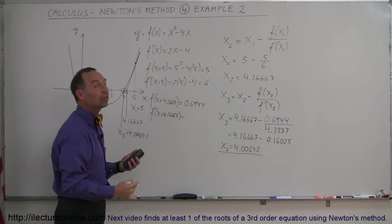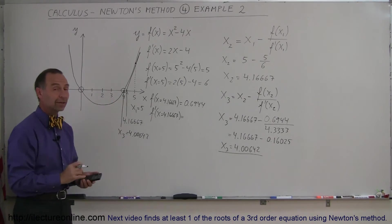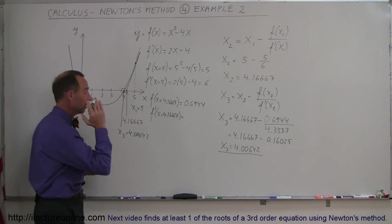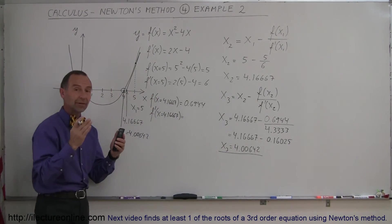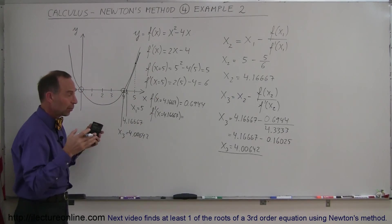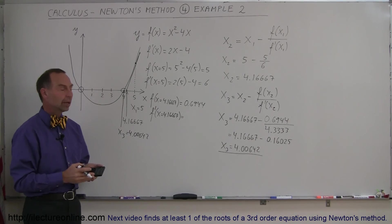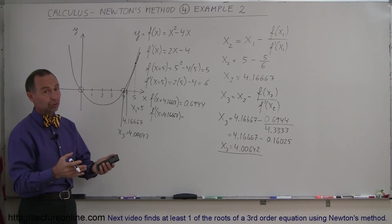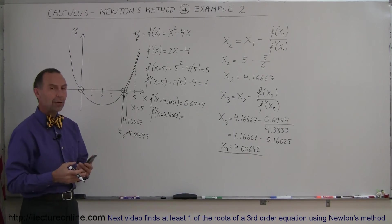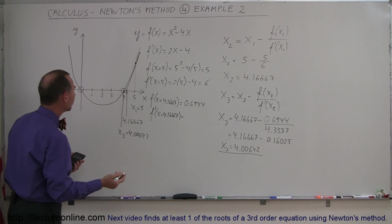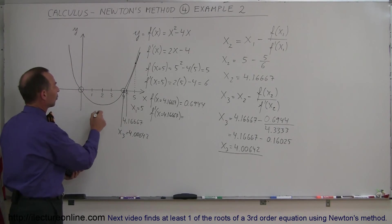You can continue this methodology, get it more and more accurate, but very soon you'll begin to realize, oh, my first root is going to be 4 because it's in the limit as we keep doing this method. We get closer and closer and closer to the actual root. I think we're close enough to realize our first root is 4, and so how would we find our second root? Well, we can do that by picking a different point.